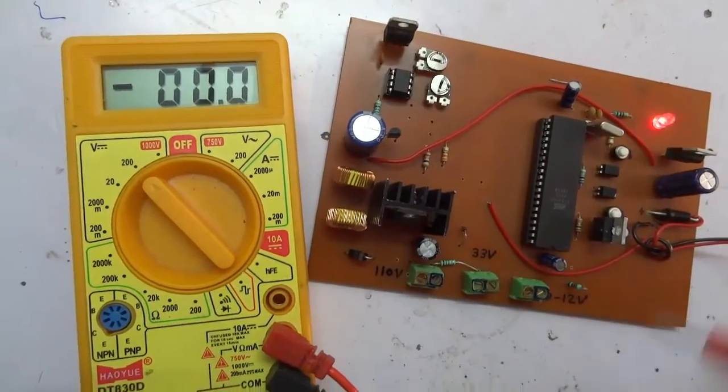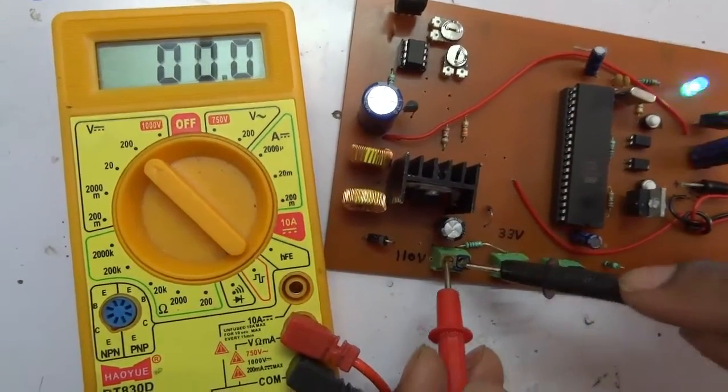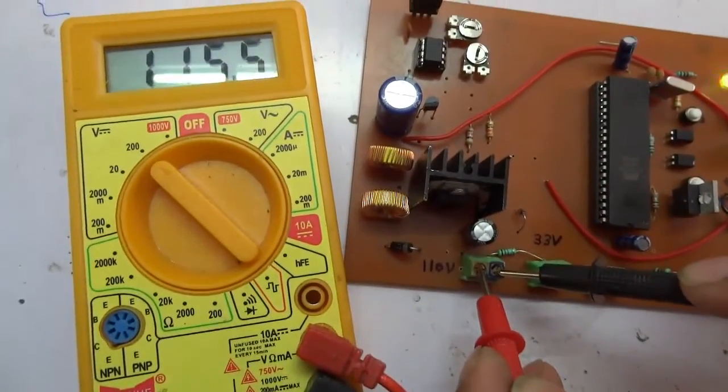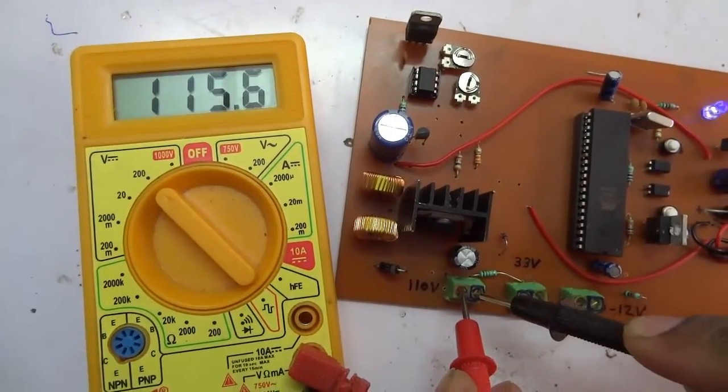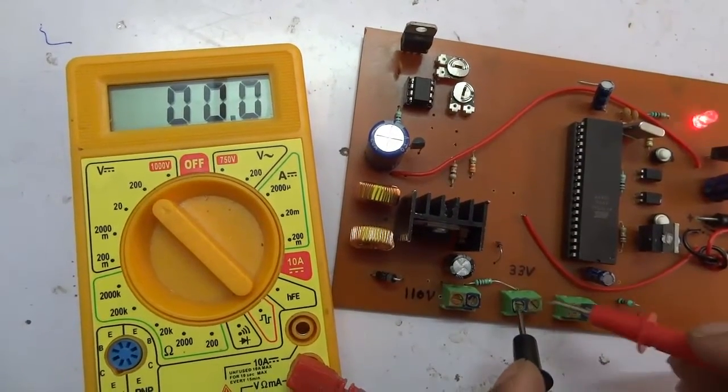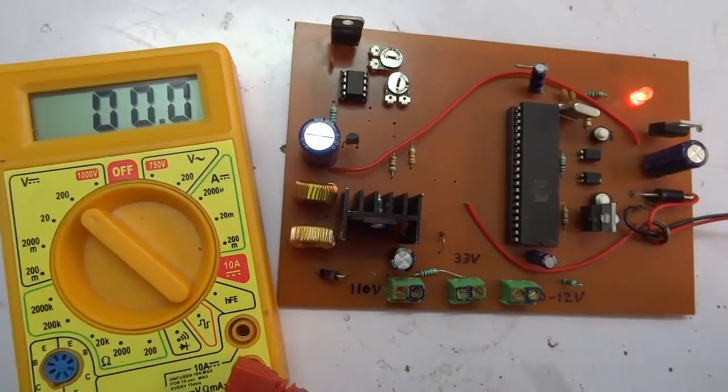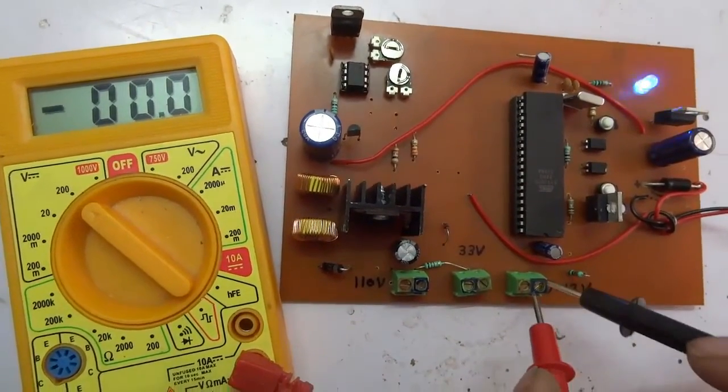Here we have given 12V input to the circuit. And at the output we get 110V, 33V and this is the variable output of 0-12V.